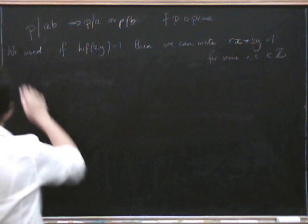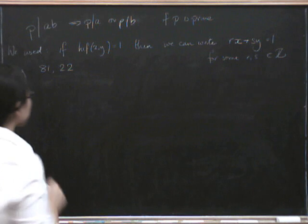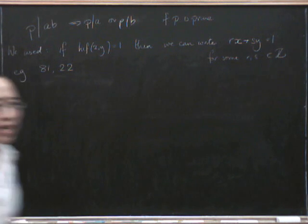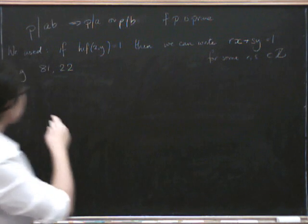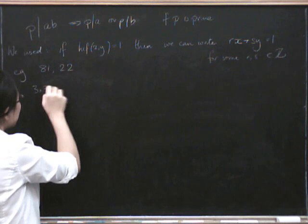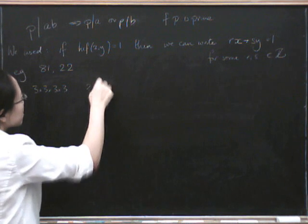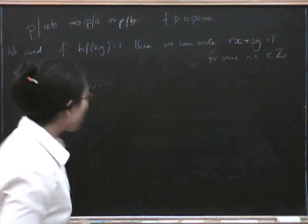Let's try 81 and 22. So first of all, let's think about the highest common factor for a second. This is 9 times 9, right? So that's 3 times 3 times 3 times 3. And this is 2 times 11. So the highest common factor is definitely 1.